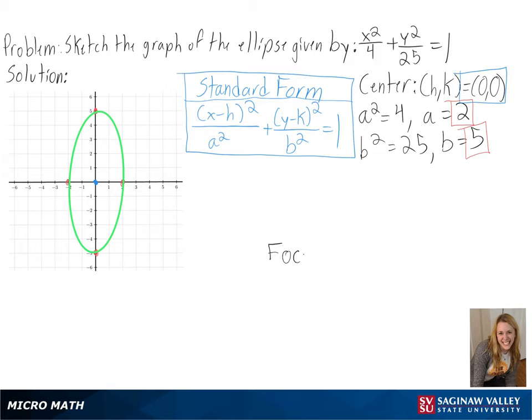we could also find the foci of our ellipse by finding c, or the square root of b squared minus a squared. This will be plotted on our longest axis, in this case our y-axis, on either side of our center. By plugging in our values, we get the square root of 21, or around 4.58 on either side of our center.